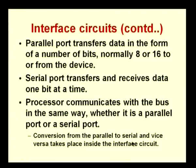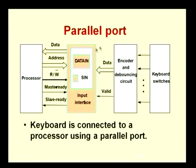The actual conversion between parallel and serial formats takes place inside the interface circuit. As far as the processor is concerned, it transfers data to the interface circuits as parallel data transfers only. Let us take an example of a parallel input port using a keyboard connected through a parallel interface. We assume a 32-bit processor using memory-mapped I/O with an asynchronous bus protocol — it accesses the bus when required via a request and gets access via a response or ready signal.